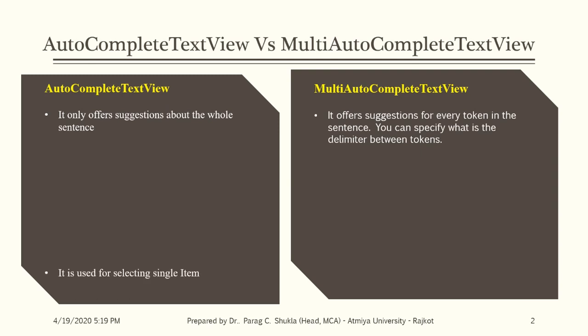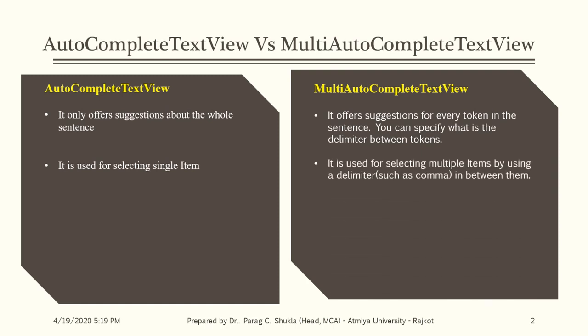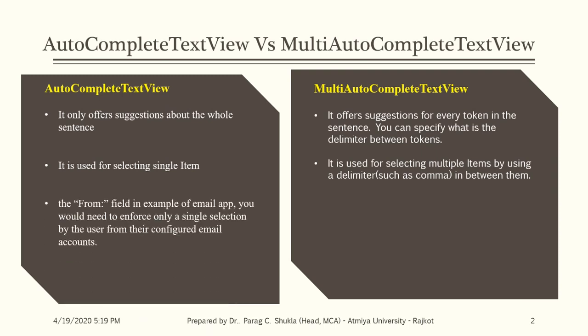In AutoCompleteTextView, it is used for selecting a single item. In MultiAutoCompleteTextView, it is used for selecting multiple items. By using a delimiter — for example, a comma — between the items, it is used in MultiAutoCompleteTextView.